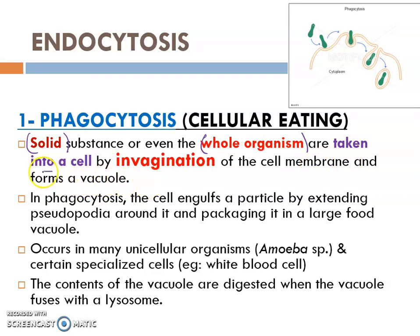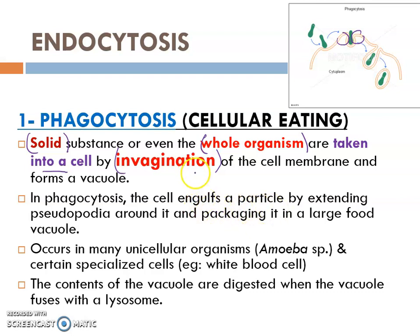How are particles going to be taken into the cells? By invagination of the cell membrane, which will form the vacuole. Another description of phagocytosis: the cell engulfs a particle — engulf referring to invagination — a microorganism or bacterium by extending pseudopodia around it and packaging it into a large food vacuole.